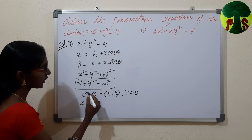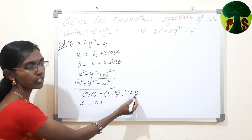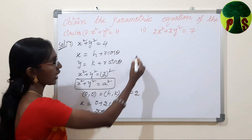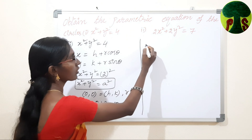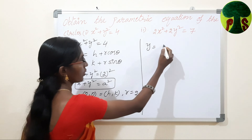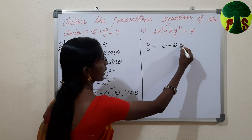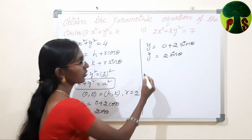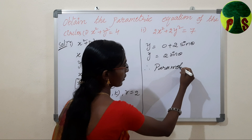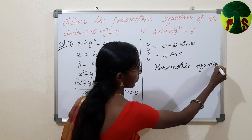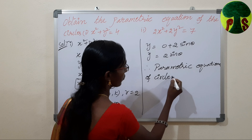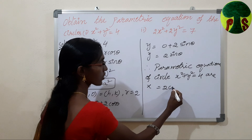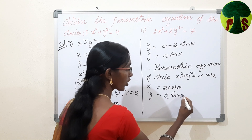So, x equals h, which is 0, plus r which is 2, into cos theta. From this we get x equals 2 cos theta. Now we find y equals k plus r sin theta. y equals k which is 0, plus r which is 2, times sin theta. So y equals 2 sin theta. Therefore, the parametric equations of the circle x squared plus y squared equals 4 are: x equals 2 cos theta and y equals 2 sin theta.